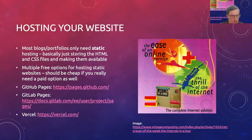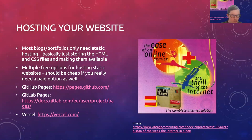Some of the options we tend to use — because we're already using GitHub to host our code — include GitHub Pages, which provides a fairly simple way to turn code you're hosting into a website. There's a competitor called GitLab that does the same thing, and there are different web development companies that also offer free hosting for your websites. One I've used is Vercel, but there are hundreds of options out there if you just need a way to host your files.